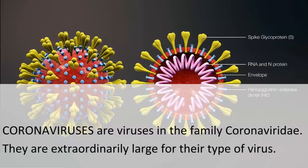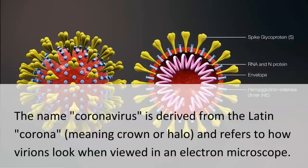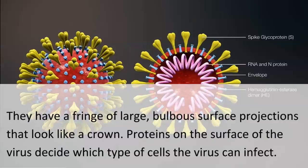Coronaviruses are viruses in the family Coronaviridae. They are extraordinarily large for their type of virus. The name coronavirus is derived from the Latin corona, meaning crown or halo, and refers to how virions look when viewed in an electron microscope. They have a fringe of large bulbous surface projections that look like a crown.